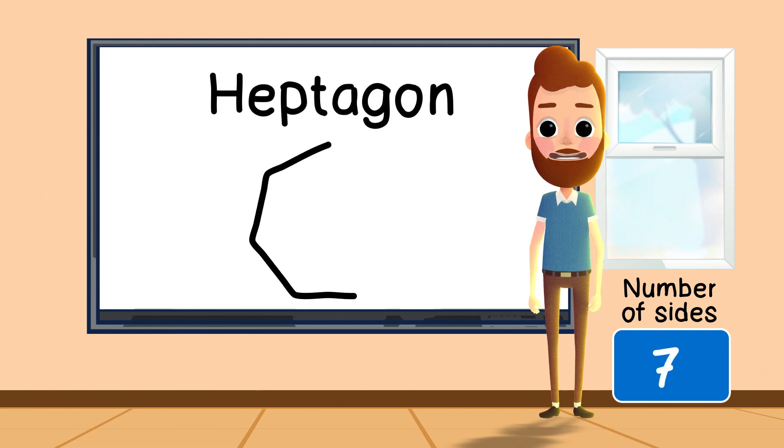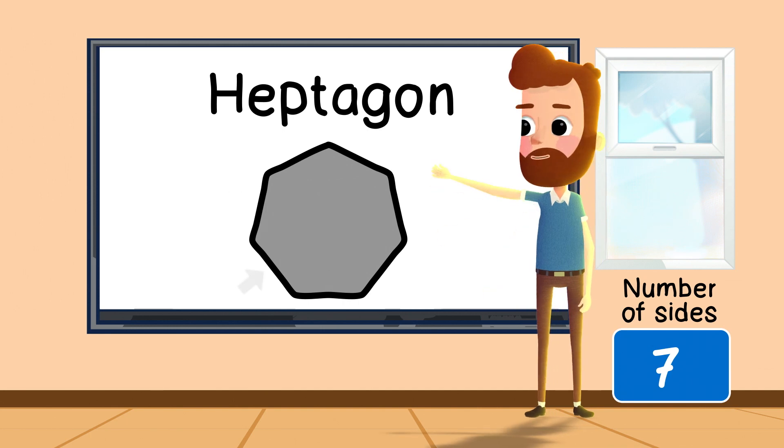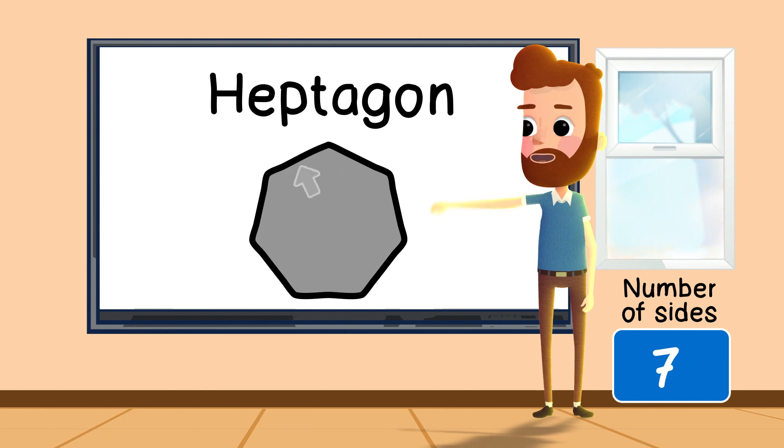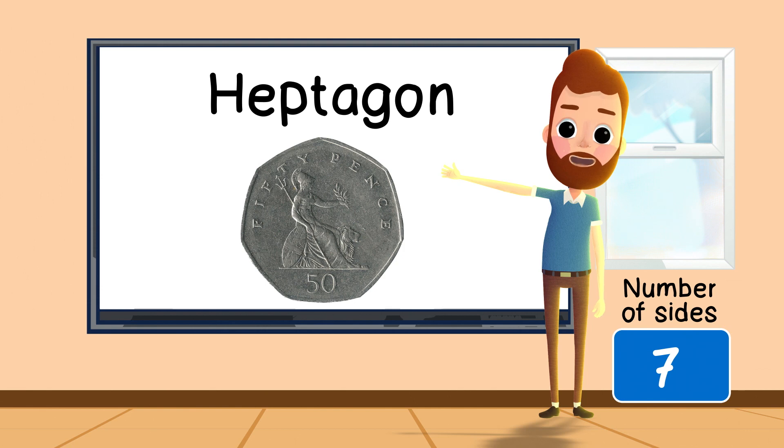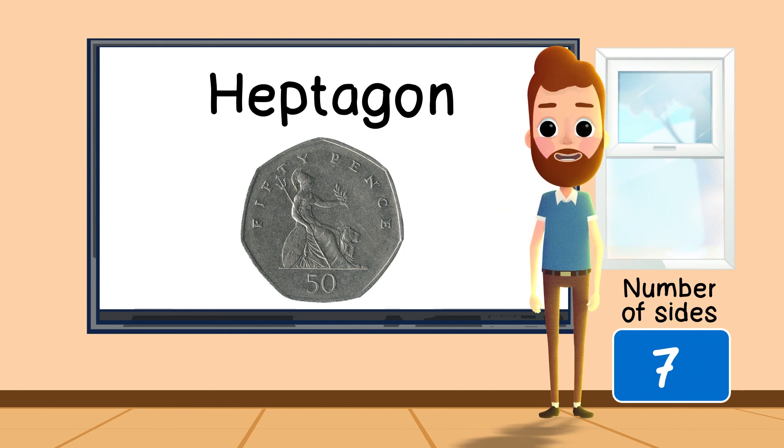A heptagon is a shape which is made of seven sides. Side one, side two, side three, side four, side five, side six, and side seven. A fifty-pence piece is made up of seven sides.